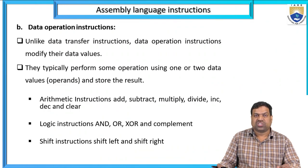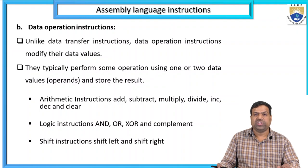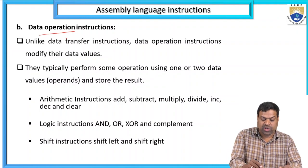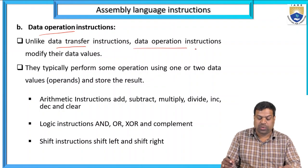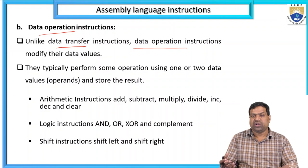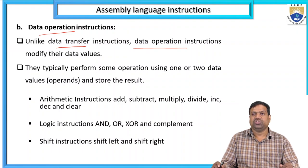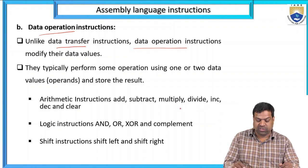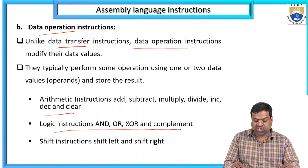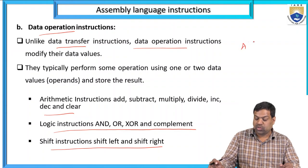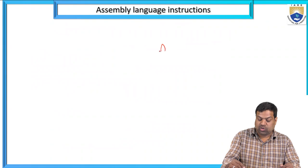Data operation instructions, unlike data transfer instructions, modify the data values. For data operation — addition, subtraction, or any arithmetic — it is possible through instructions. They typically perform some operation using one or two data values (operands). For example, I want to go for the addition of two numbers.